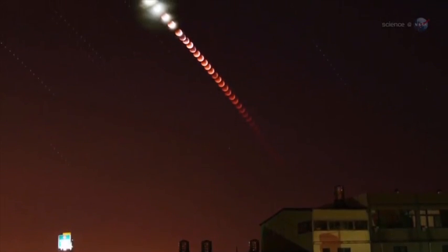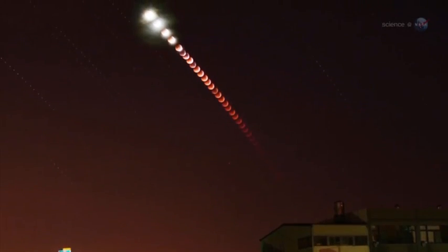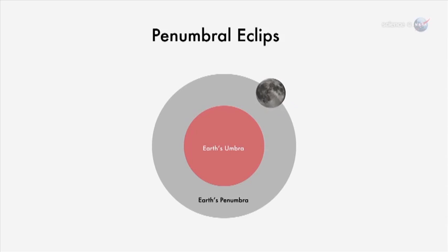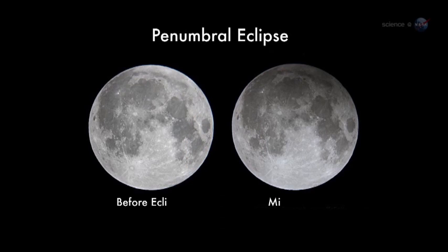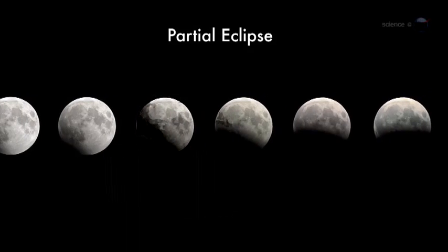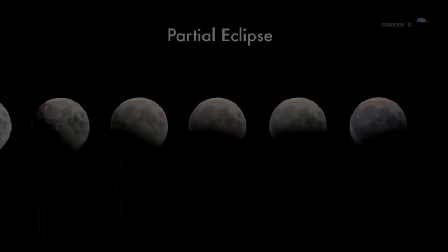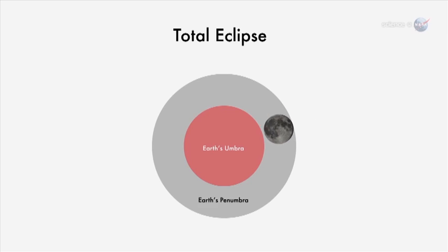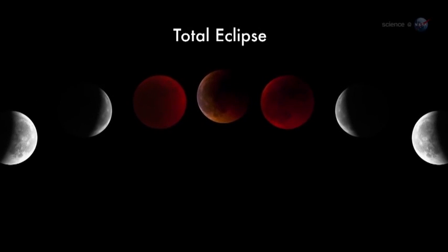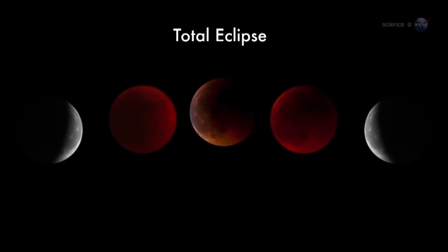On average, lunar eclipses occur about twice a year, but not all of them are total. There are three types. A penumbral eclipse is when the moon passes through the pale outskirts of Earth's shadow — it's so subtle, sky watchers often don't notice an eclipse is underway. A partial eclipse is more dramatic; the moon dips into the core of Earth's shadow but not all the way, so only a fraction of the moon is darkened. A total eclipse, when the entire moon is shadowed, is best of all. The face of the moon turns sunset red for up to an hour or more as the eclipse slowly unfolds.